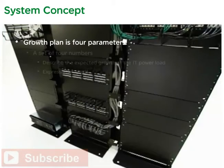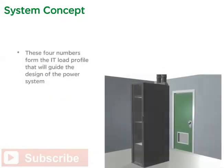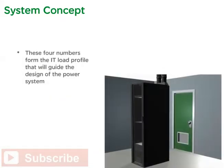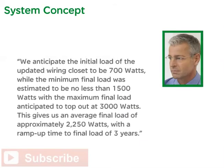The growth plan consists of four parameters — a set of four numbers that describe the expected growth of the IT power load expressed in watts. These four numbers form the IT load profile that will guide the design of the power system. Uncertainty about future growth is handled by providing both a maximum final load and a minimum final load, and assuming the option of a scalable system design that approaches the maximum value in increments over time. Crawford and Kelly discussed capacity and growth plan in great depth. They anticipated an initial load of 700 watts, a minimum final load of no less than 1,500 watts, with a maximum final load of 3,000 watts, giving an average final load of approximately 2,250 watts, with a ramp-up time to final load of three years.